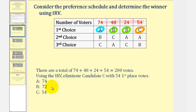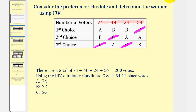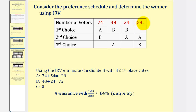So using instant runoff voting, we would eliminate candidate C with 54 first place votes. If we eliminate candidate C, or delete C from the table, notice how these 54 votes are now assigned to candidate A. So candidate A now has 74 plus 54, or 128 votes, and candidate B still has 48 plus 24, or 72 votes. Because candidate A has a majority of the votes, or 64 percent, candidate A is the winner.